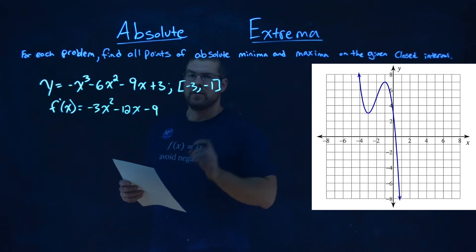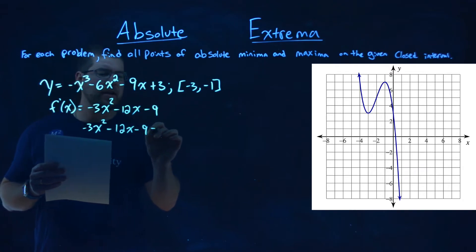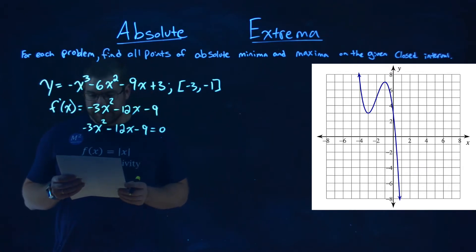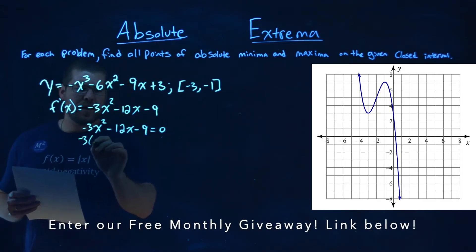From there, let's set our derivative equal to 0. We have negative 3x squared minus 12x minus 9 equals 0, and now we're solving for x. I pulled out a negative 3 from all parts here, so negative 3 comes out,